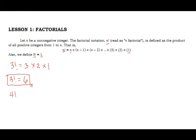Another example: 4 factorial. Starting from 4, we subtract 1 each time: 4 times 3 times 2 times 1. So 4 times 3 is 12, times 2 is 24, times 1 is still 24. Therefore, 4 factorial equals 24.